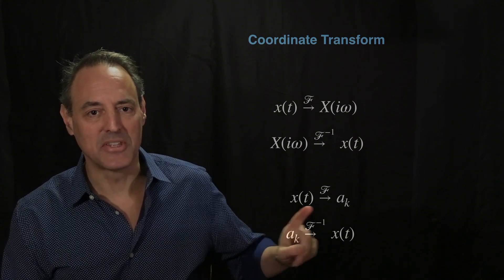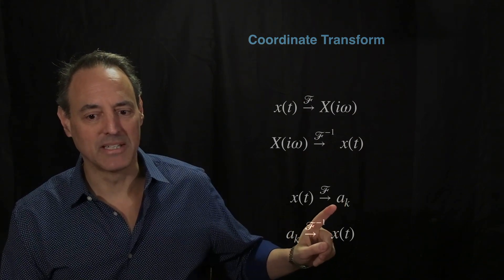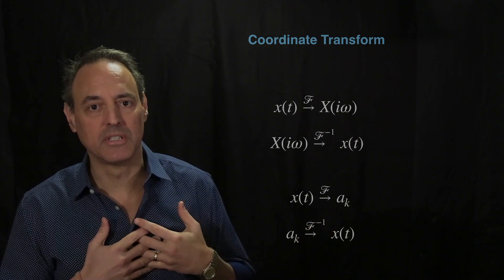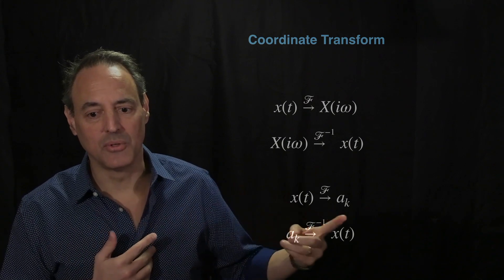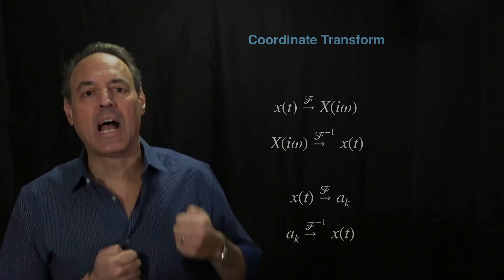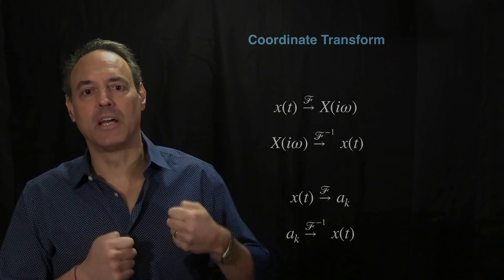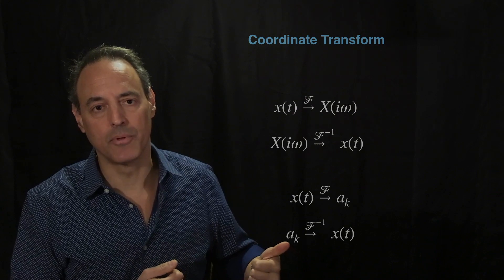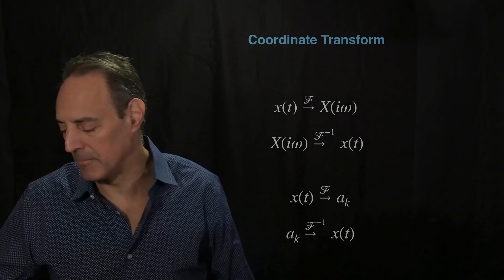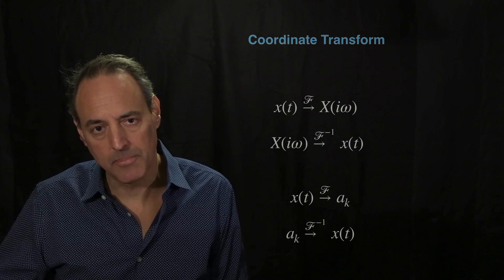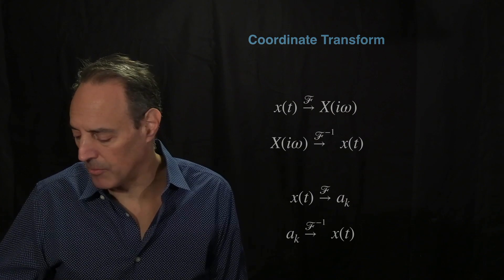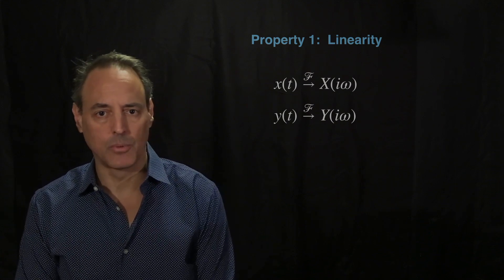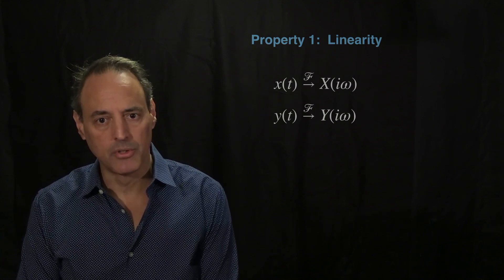Another way to think about this is that the Fourier domain is like our Fourier series representation, where we have the a_k coefficients. I trade out my time coordinate system for the a_k's, which represent how much is in the cosine t, cosine 2t, cosine 3t directions, and then I can come from those coordinates back out to the time domain.